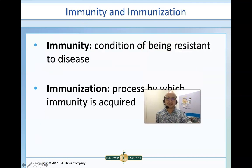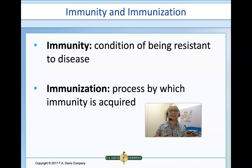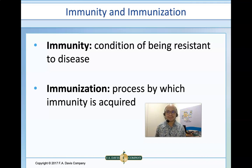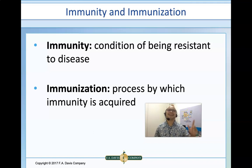Let us first define what we mean by immunity. Immunity refers to the condition of being resistant to disease. If you are immune, it means you will not have that particular type of infection. For example, I am immune to polio, measles, and mumps because when I was a kid, my mom had me immunized against those infections. However, without boosters, there is a possibility that antibodies may diminish, especially if one becomes immunocompromised.